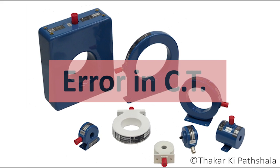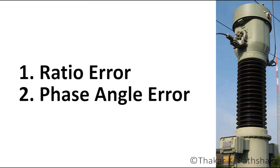Last topic for this discussion is error in current transformer. There are mainly two types of error in CT, one is ratio error and second is phase angle error.